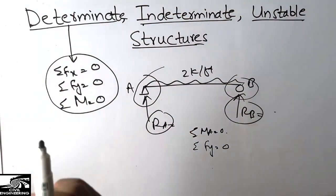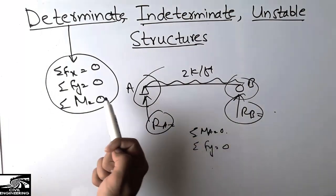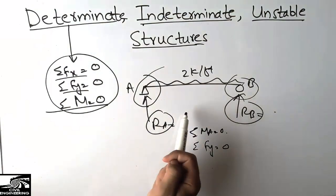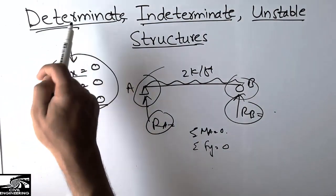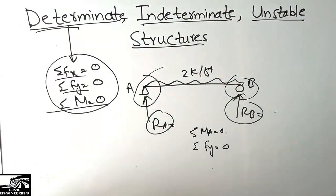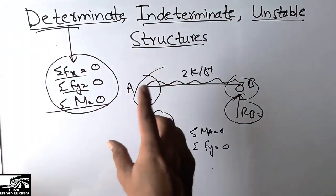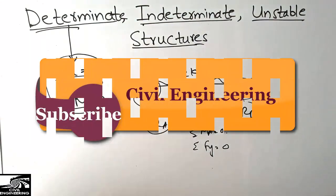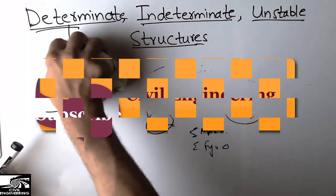We call this type of structure a determinate structure because we can find the unknown reactions using these three equilibrium equations. There is also another method to find whether a structure is determinate, which I will explain later.